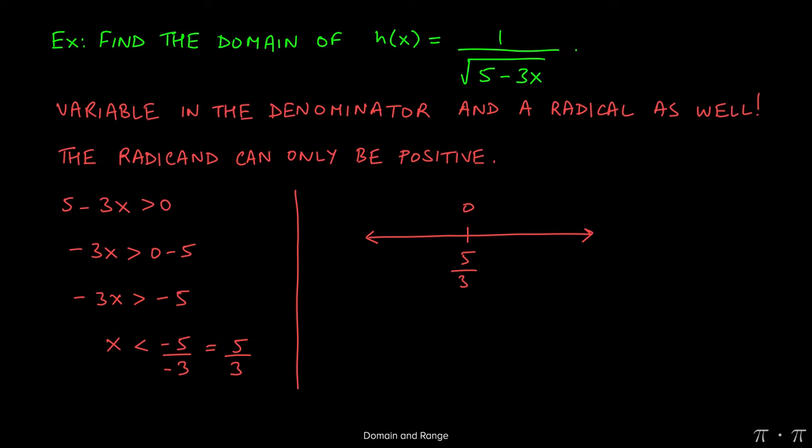The reason for that is if we were to plug 5 thirds in here, the 3s would cancel. You'd be left with 5 minus the 5 which is 0. When you find the square root of 0 you're going to get a 0 in the denominator of the fraction, which is illegal. So all the numbers to the left of 5 thirds are fine. 5 thirds itself is not.